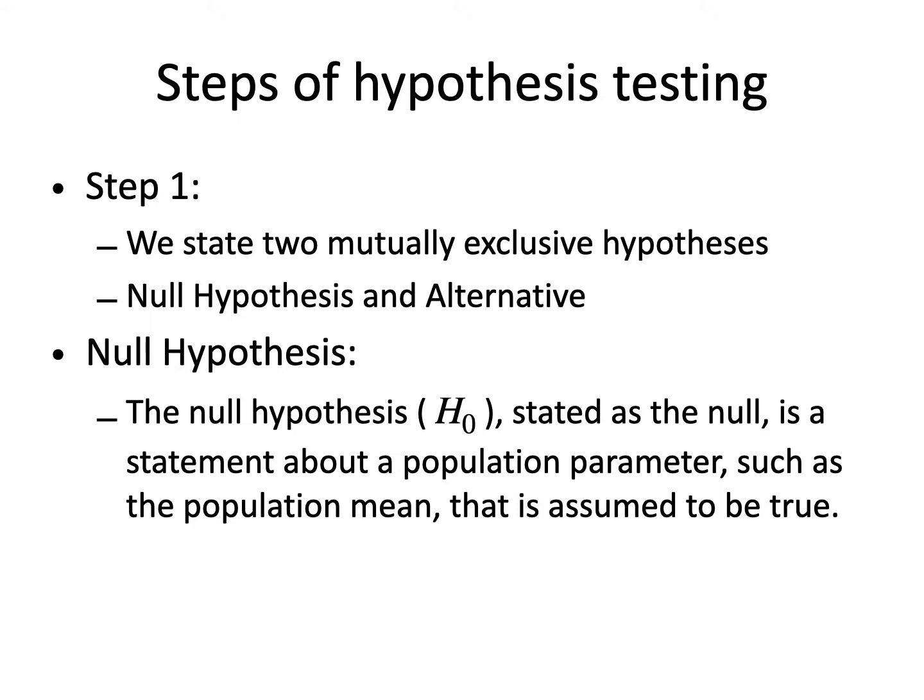There are two mutually exclusive hypotheses: the null hypothesis and the alternative hypothesis. The null hypothesis is a statement about a parameter, such as the population mean, that is assumed to be true — it is a claim about the population parameter that is assumed to be true until it is declared to be false. We test the null hypothesis for possible rejection under the assumption that it is initially true.